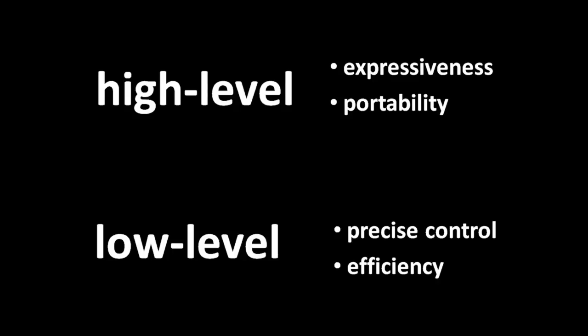Assembly languages are often called low-level languages because programmers using them are left down in all the details of the actual machine instructions. When you write a program in assembly, you're piecing it together machine instruction by machine instruction. The advantage is precise control — you can have the CPU execute the precise series of instructions that you want. In contrast, a high-level language takes away precise control from the programmer in exchange for convenience. Each line of code typically corresponds to more than just one machine instruction, thereby accomplishing more work per line of code. High-level languages also allow us to write code that is portable across different processors, so the programmer can write a program once and have it run on many target platforms.